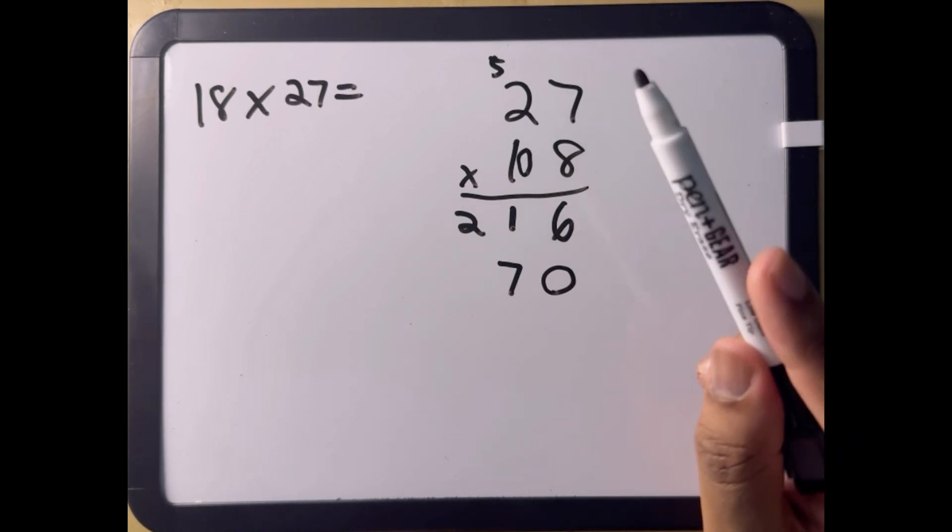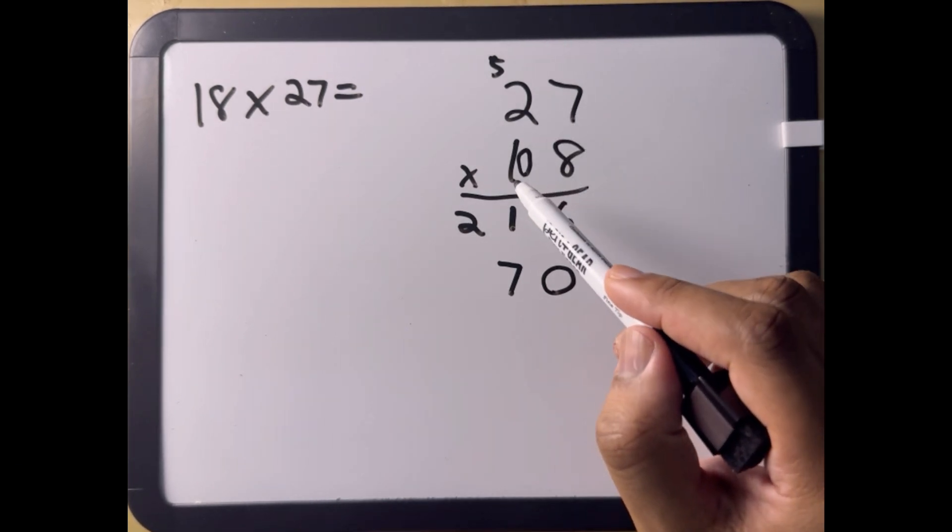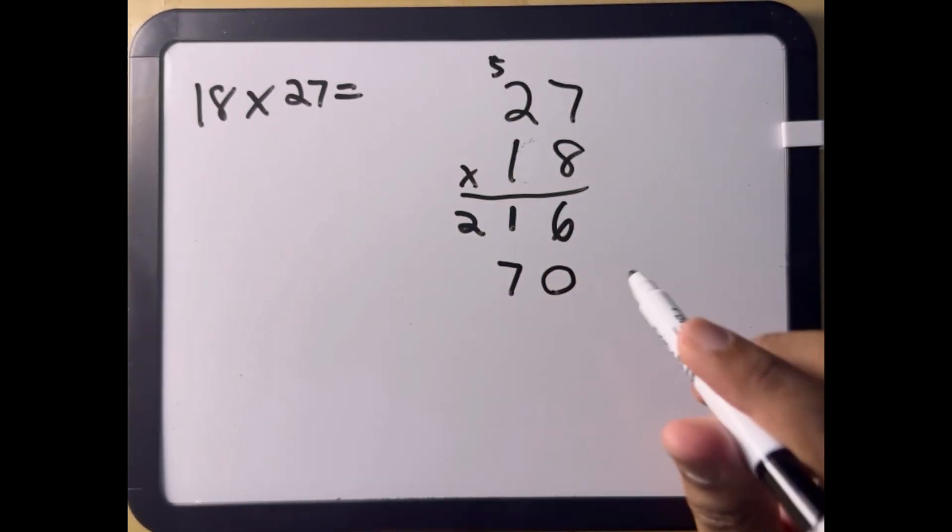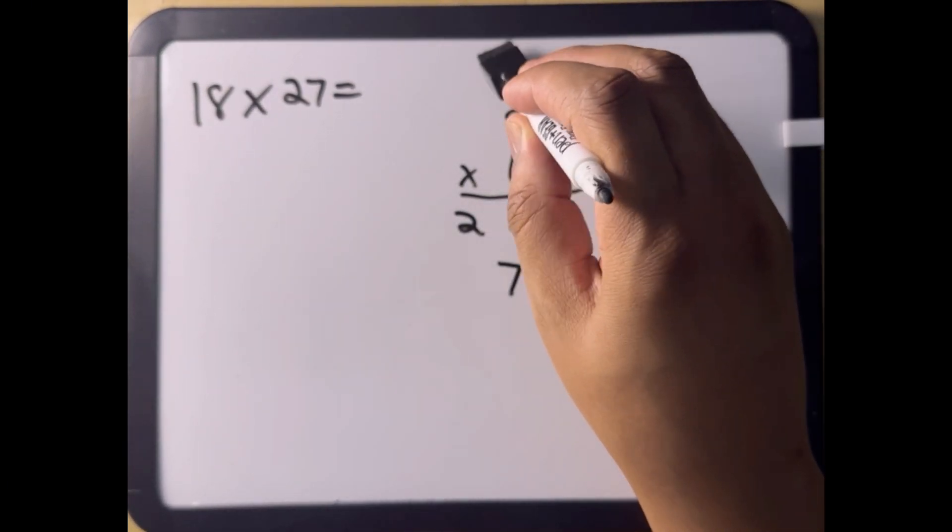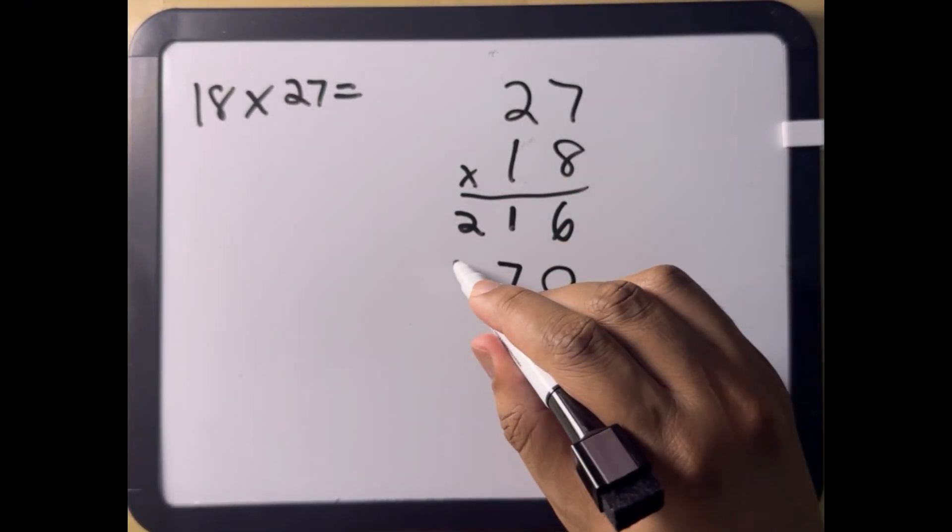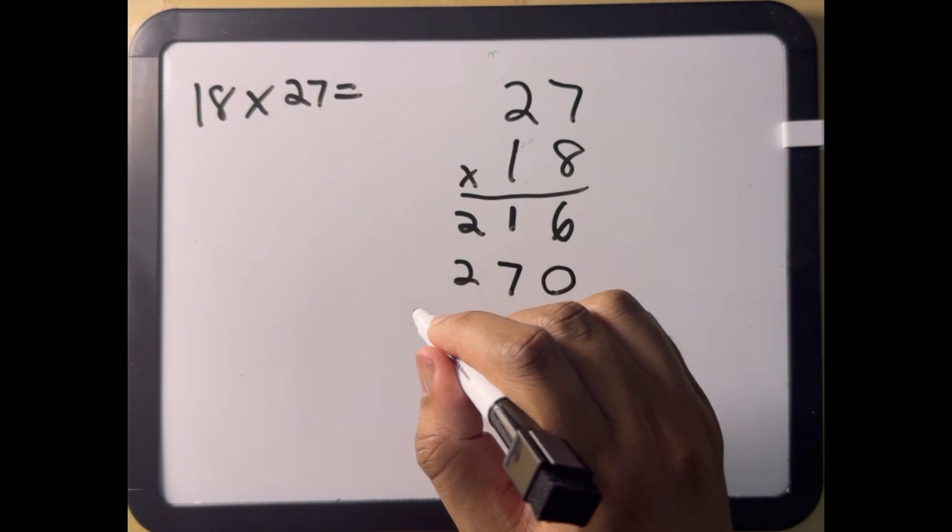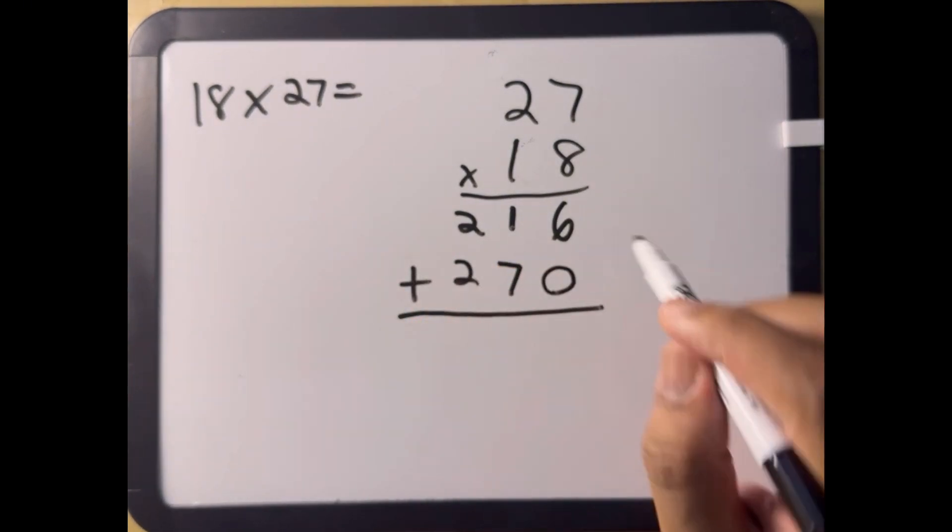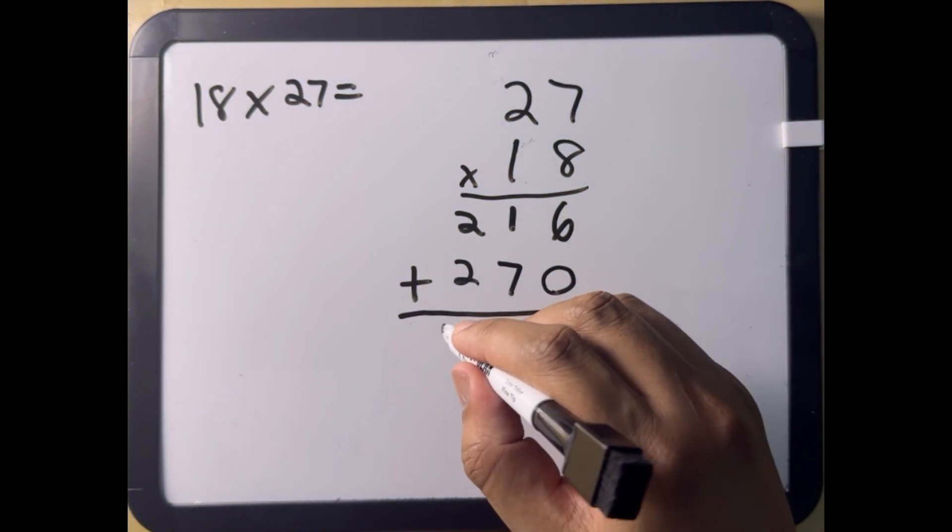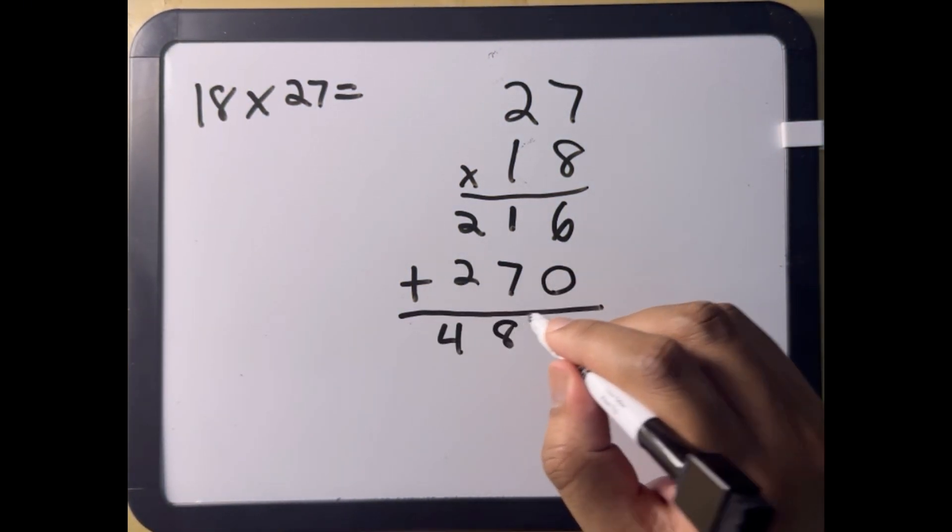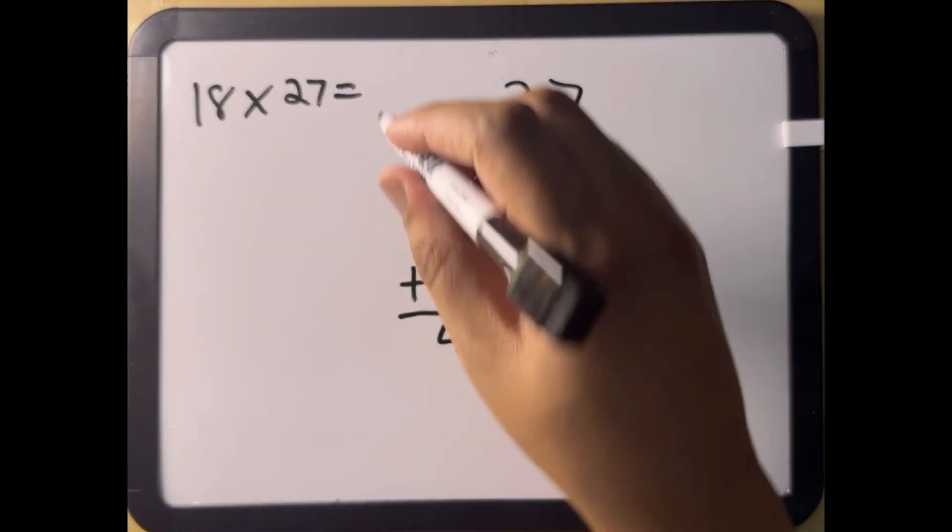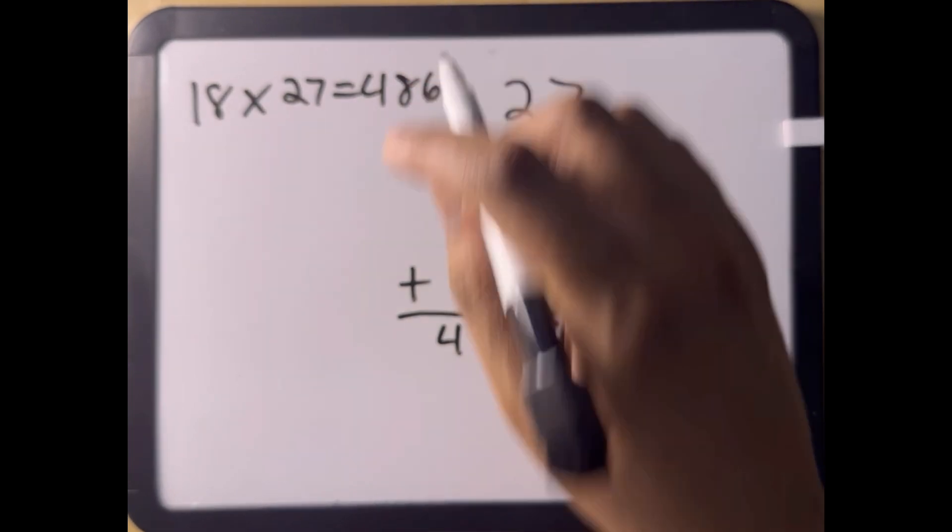And now we're back to doing 1 times 2, since we're back in the tens place. So it'll be 1, and we can forget the 5 because we've already added that remaining. So 1 times 2 is 2. Now all we do is simply add these together, and this will give us 486. So 18 times 27 is 486.